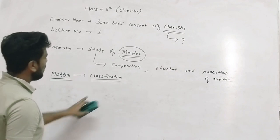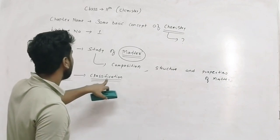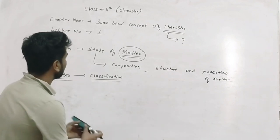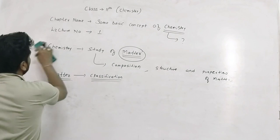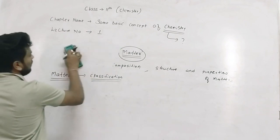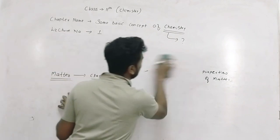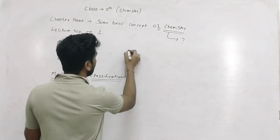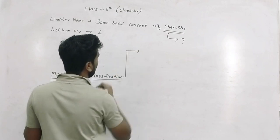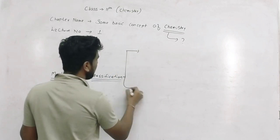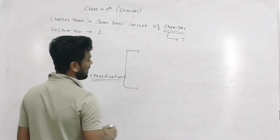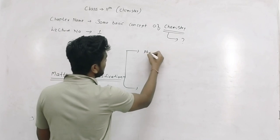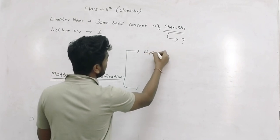Now let's talk about classification. Matter has a classification. Matter has two parts of classification. One is Physical Classification.